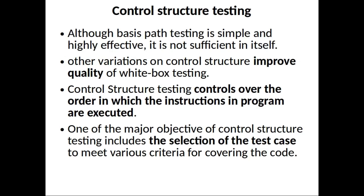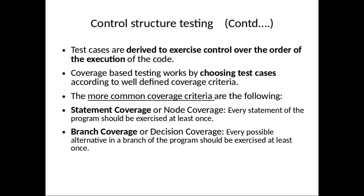One of the major objectives of control structure testing is the selection of test cases to meet various criteria for covering the code. Test cases are derived to exercise control over the order of execution. Coverage-based testing works by choosing test cases according to well-defined coverage criteria. Common criteria include statement coverage, where every statement should be exercised at least once.